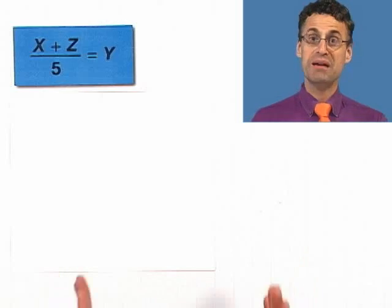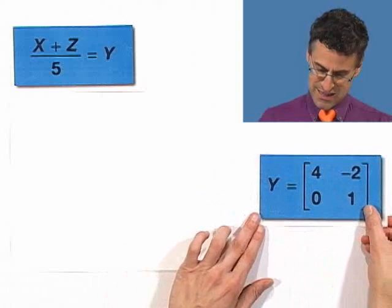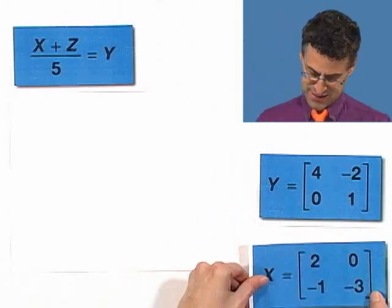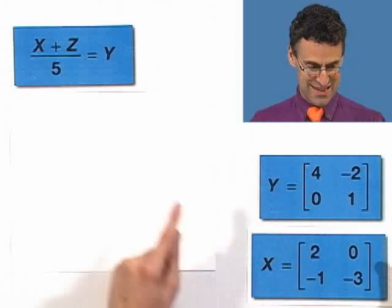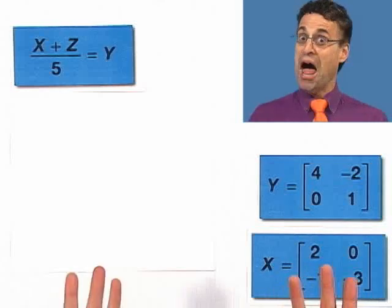They're actually matrices. So in fact, the y in this case is equal to this 2 by 2 matrix. And the x in this example is actually equal to this 2 by 2 matrix. So the z answer that we seek is really a 2 by 2 matrix. Surprise!